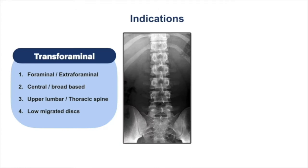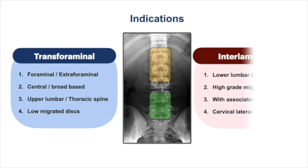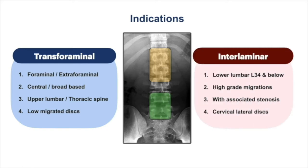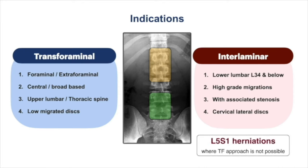Indication-wise, the transforaminal approach is more suitable for foraminal or extraforaminal disc herniations, low-migrated, central or broad-based herniations. It is also the preferred approach at upper lumbar or thoracic level disc herniations. Whereas the interlaminar approach is more suitable for lower lumbar disc herniations, especially L5-S1, where the transforaminal approach is not possible. It is also very effective for high-grade migrations, herniations associated with stenosis, and is the preferred approach for cervical disc herniations.